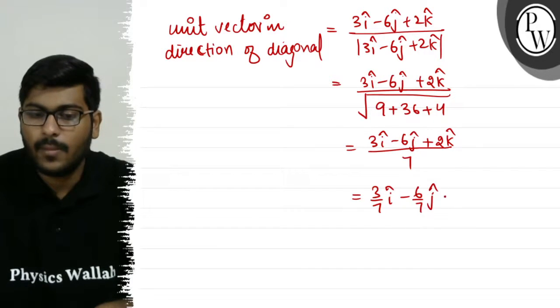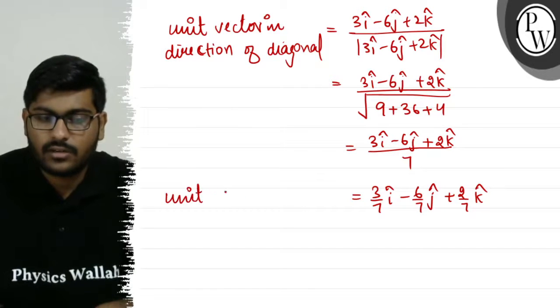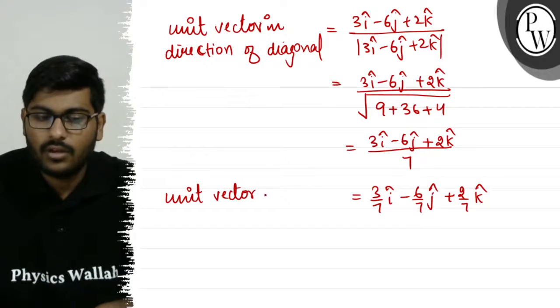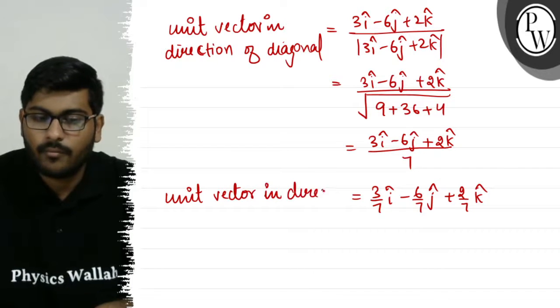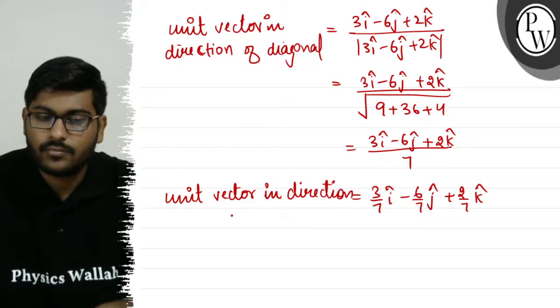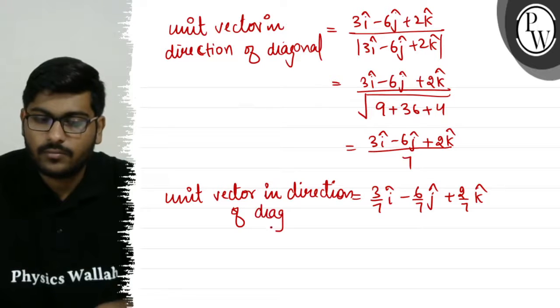So we get 3i-cap minus 6j-cap plus 2k-cap divided by 7, which equals 3/7 i-cap minus 6/7 j-cap plus 2/7 k-cap. This is the unit vector in direction of diagonal. So the answer is here.